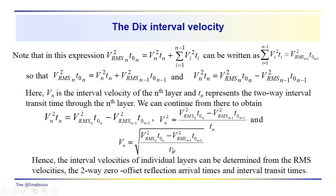I think I said this was simplifying our notation. This is actually the two-way interval transit time through the nth layer. So this is our V_n now, so we've extracted an interval velocity for the nth layer.